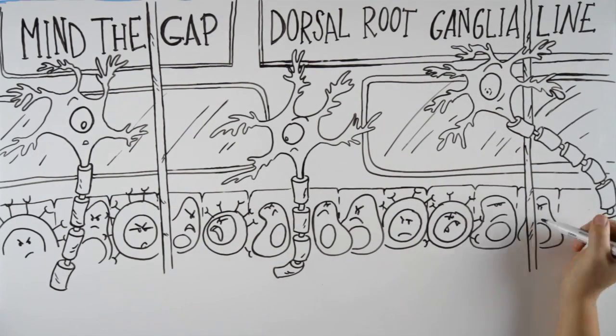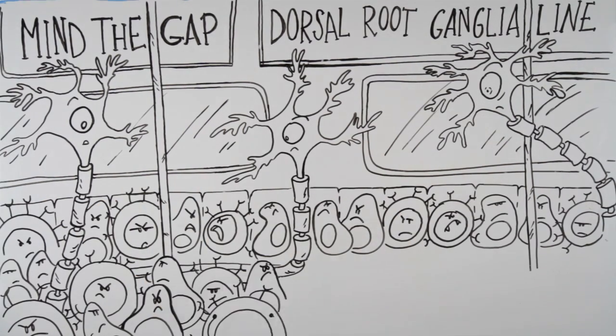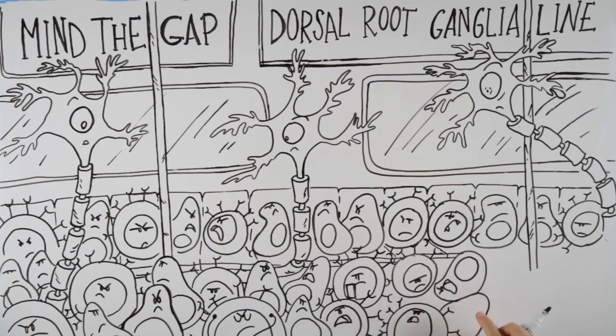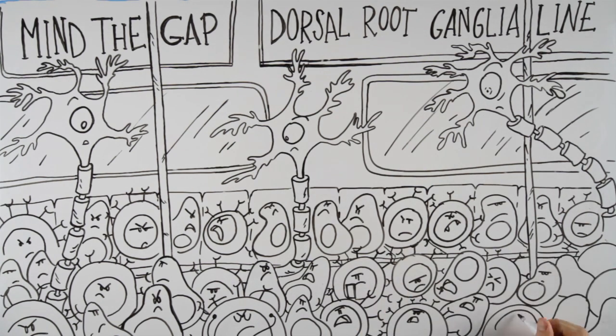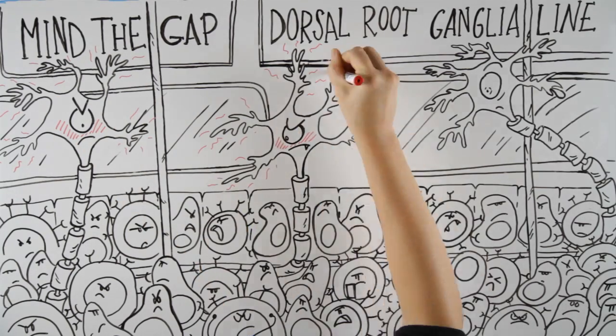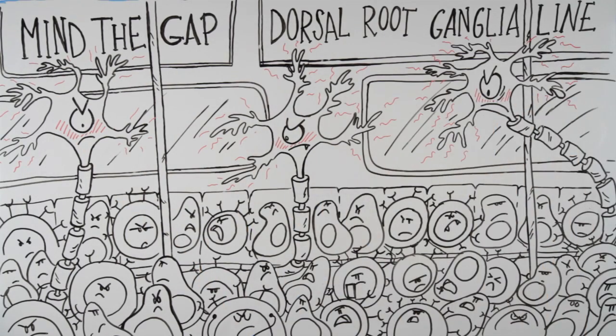Importantly, the neurons within a dorsal root ganglion originate from different sites in our extremities. If these neurons lie in an inflammatory environment, they will lower their firing threshold and become hyperexcitable. This can lead to neuropathic pain behavior.